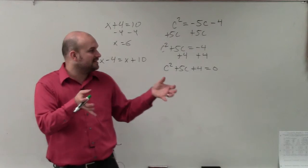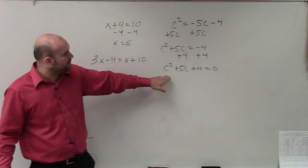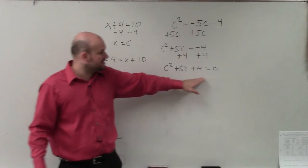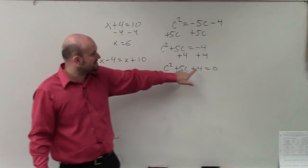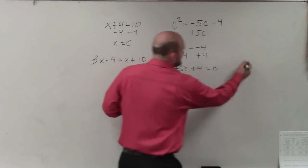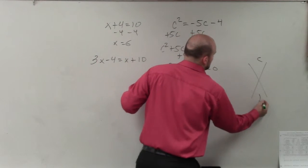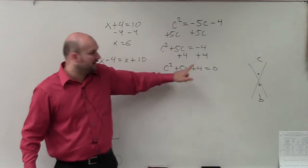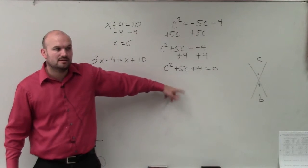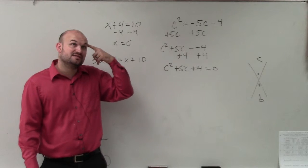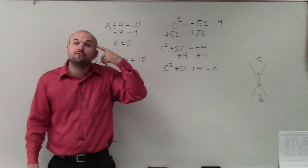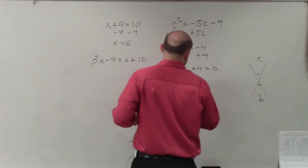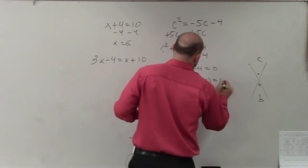So then the next thing is now we can rewrite this by using factoring, correct? We can rewrite this by using factoring. So I could say what two numbers, if I was going to use my little diamond thing, I would say what two numbers multiply to give me 4 and then add to give me 5. Well, I think of the 4's in my head. That's 4 times 1 or 2 times 2. Well, 4 plus 1 gives me 5. So I could factor this into c plus 4 times c plus 1 equals 0.